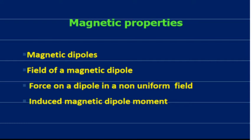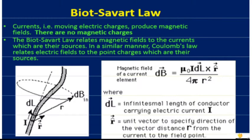We have to discuss the magnetic properties, specifically magnetic dipoles. A dipole has two polarities — just as the electric dipole has a positive and negative charge, the magnetic dipole has a north pole and south pole which together form a magnetic dipole. The Biot-Savart law relates magnetic fields to the currents which are their sources; there are no magnetic charges, only moving electric charges.